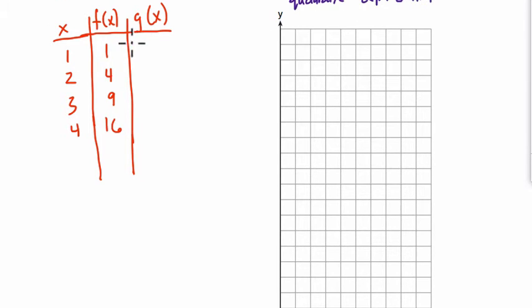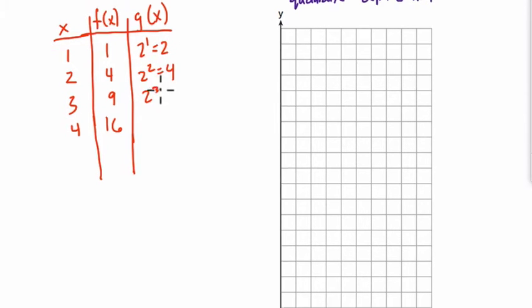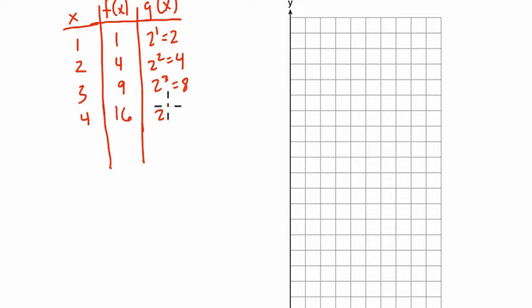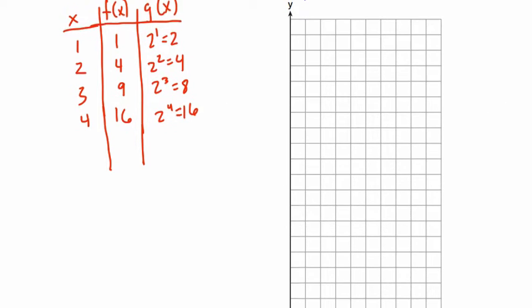So 2 to the x power, 2 to the first equals 2, 2 to the second equals 4, 2 to the third equals 8, and 2 to the fourth equals 16. So we can now turn this table into a graph.